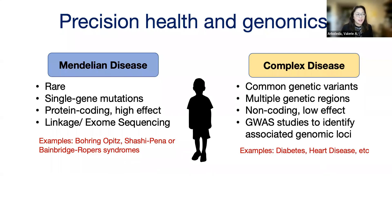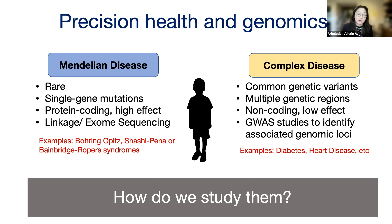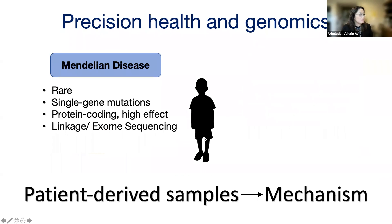Most of the time, Mendelian and complex disorders have been studied distinctly. Medical geneticists were typically studying Mendelian disorders, and population geneticists would study complex disorders. But we now know that patients who have Mendelian disorders also have common genetic variants and may be predisposed to some complex disorders. There's an overlap that we haven't fully appreciated in the absence of genome sequencing. Today, though, I'm really going to focus on Mendelian disorders.